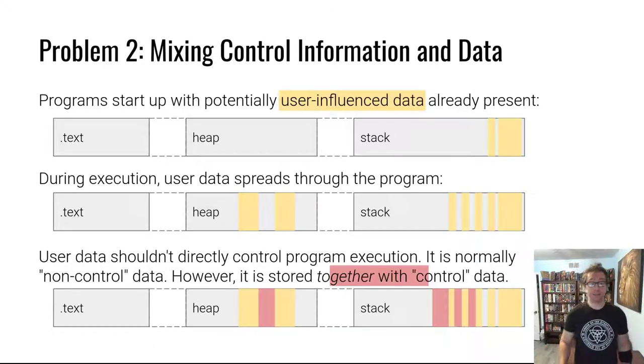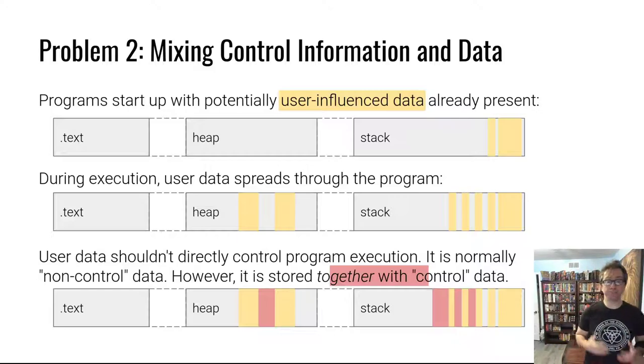The problems that arise have to do with these other high-level problem causes. To begin with, C mixes control information and data in the same place. You should remember the stack you learned about in the previous module in reverse engineering. The stack holds a lot of user data, but unfortunately programs store a lot of control information